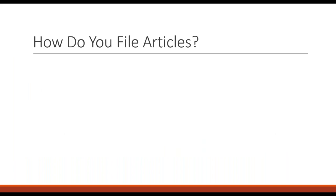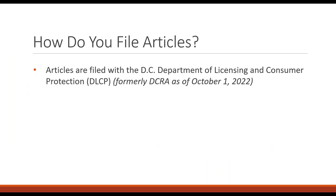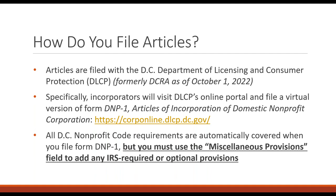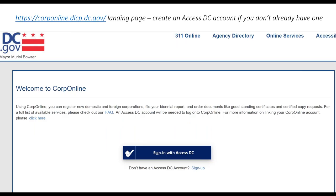We've gone through the content — now I'm going to show you screenshots of how to file your articles. Your articles are filed with the DC Department of Licensing and Consumer Protection. Specifically, there's a form called DNP-1, and you should file it online because there's a very user-friendly online portal. All the DC Nonprofit Code requirements — your name, registered agent, whether you have members — are automatically covered when you file the DNP-1 form, but you must use the miscellaneous provisions box to add IRS-required provisions and any additional recommended provisions.